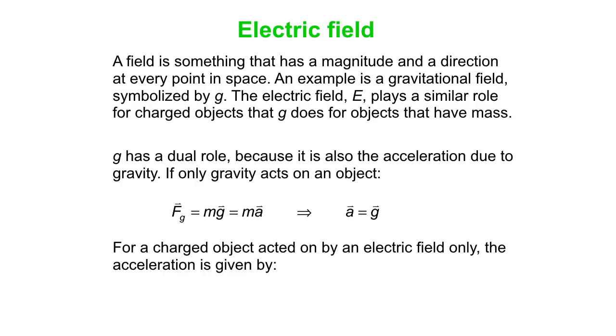It's not quite as simple when you have a charged object acted upon by an electric field only. In that case, the electric force is Q times the electric field, similar to m times the gravitational field. That equals ma. But now we don't have an m on both sides of the equation, so nothing cancels. Here the acceleration is QE over m.